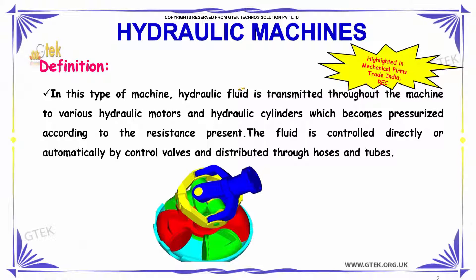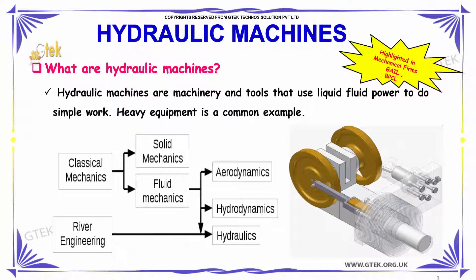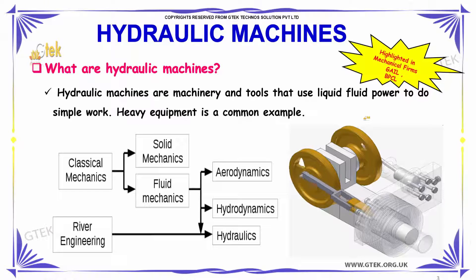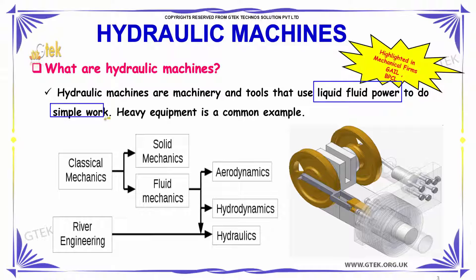The first and foremost definition of hydraulic machines: in these types of machines, the hydraulic fluid is transmitted throughout the machine to various hydraulic motors and hydraulic cylinders, which becomes pressurized according to the resistance present. The fluid is controlled directly or automatically by controlled valves and distributed through hoses and tubes. Hydraulic machines are machinery and tools that use liquid fluid power in order to do simple work. Heavy equipment is considered to be the common example.